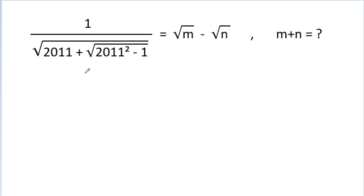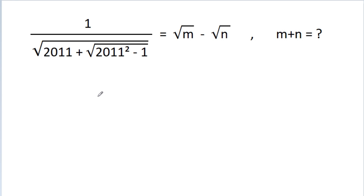In this video, we have given that 1 by √211 plus √(211² - 1) is equal to √m minus √n, and we have to find the value of m plus n.